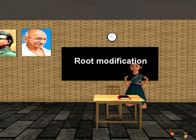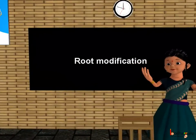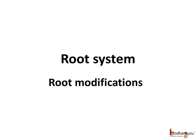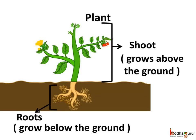Good morning children. Today we shall learn more about the modifications in the root system. We already know that the whole plant can be divided into two parts. The underground part, or the part that remains under the soil, is called the root system. And the part that grows above the ground is called the shoot system. The shoot consists of the stem, leaves, buds, flowers, fruits, etc.